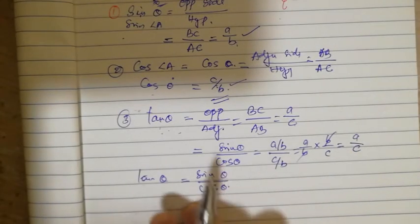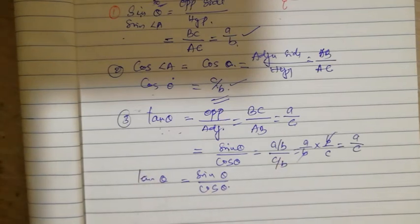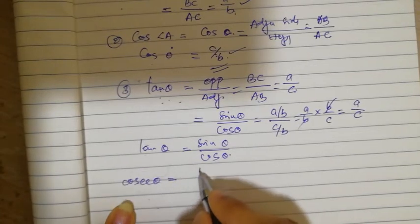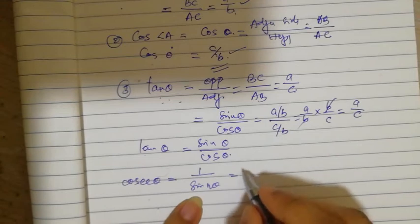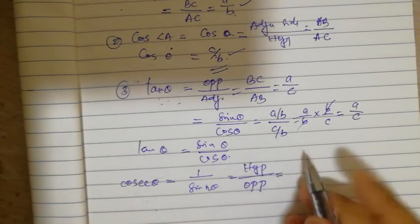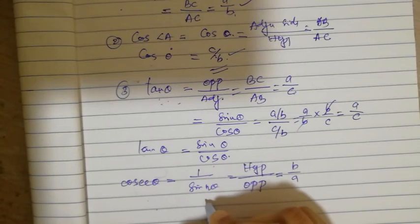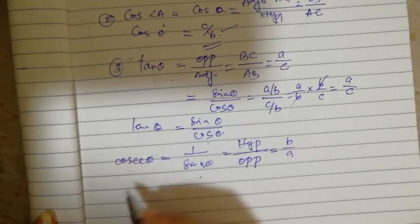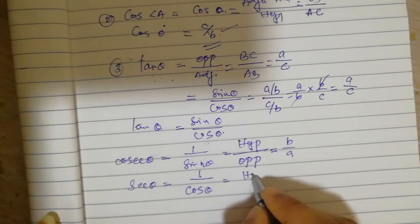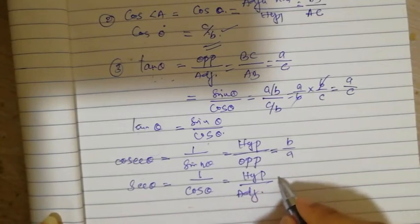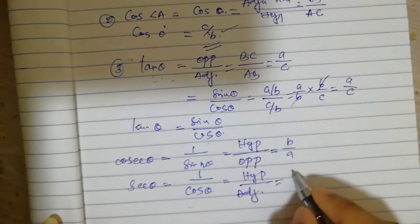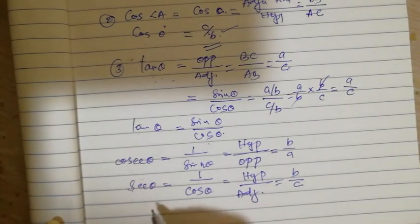After studying those three, the next ones come easily. Cosec theta is equal to one by sin theta, which means hypotenuse by opposite side, giving b by a. Sec theta is equal to one by cos theta, which means hypotenuse by adjacent side. Since cos theta is c by b, sec theta equals b by c.